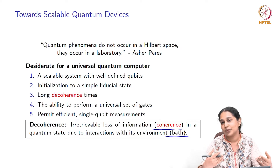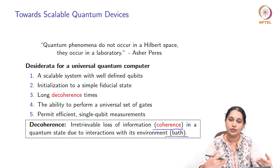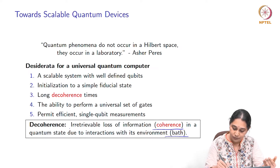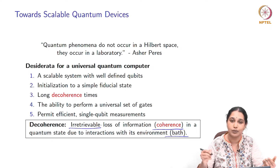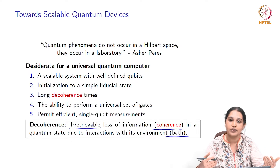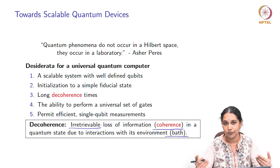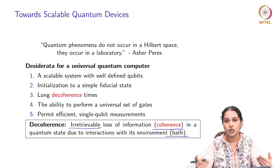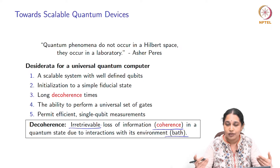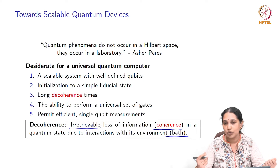This transformation, unlike a unitary transformation, is not a reversible transformation — and hence the word irretrievable — that this loss of coherence does not occur in a reversible way. Rather, it occurs in a way that cannot be reversed. And this of course leads to noise in our qubits.